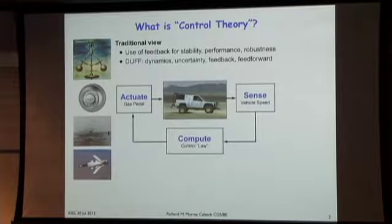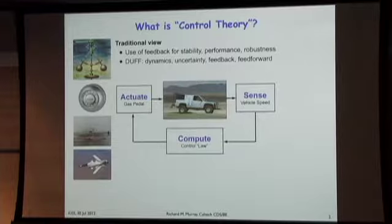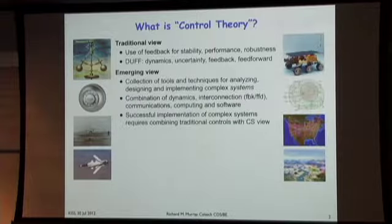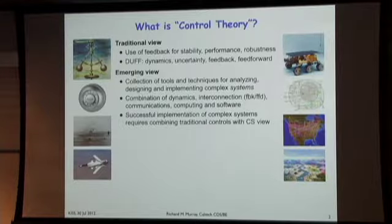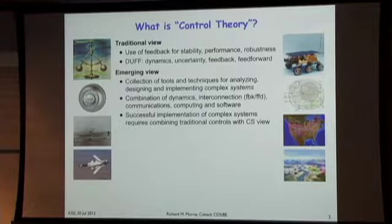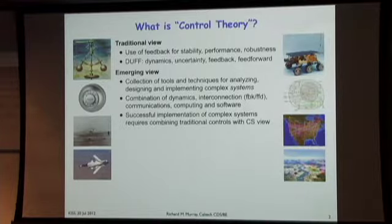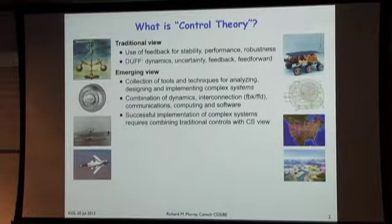Traditionally we looked at systems like thermostats and flight control systems that fit within this paradigm. But the sorts of things people are looking at more recently are more complicated—Mars rovers, the internet, complex battlefield management systems. We now think of control theory more as a set of tools and techniques for analyzing, designing, and implementing complex systems, combining dynamics and interconnection, feedback and feedforward, but also communications, computing, and software.